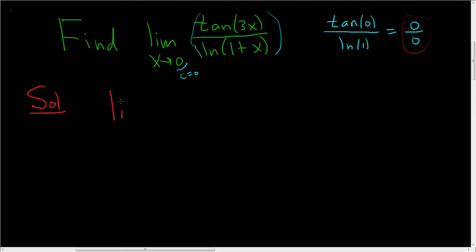This is the limit as x approaches 0. L'Hopital's just says that whenever we have a form like 0 over 0 or infinity over infinity, we just take the derivative of the numerator and the derivative of the denominator.